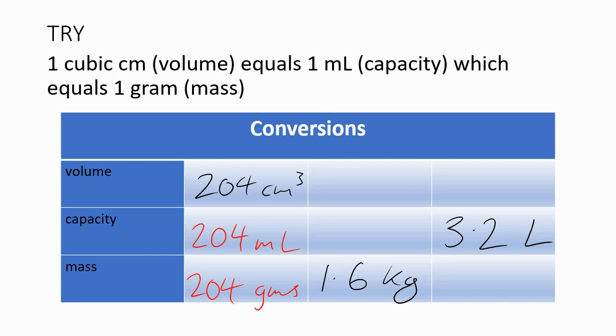For 1.6 kilograms, your equivalent capacity should have been 1.6 litres. And you could have also had 1,600 millilitres. That would have been perfectly acceptable. Your volume would have been 1,600 centimetres cubed.